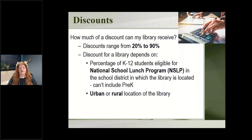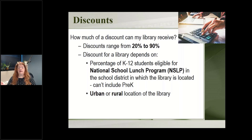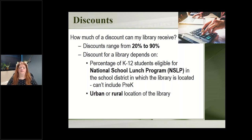The discount is based on the free and reduced lunches that children get in the school district where your library is. The FCC chose this as one of the many ways to determine levels of poverty — the more kids eligible for the program, the needier the community, and the higher the discount. This was picked as the indicator, using the school lunch numbers.